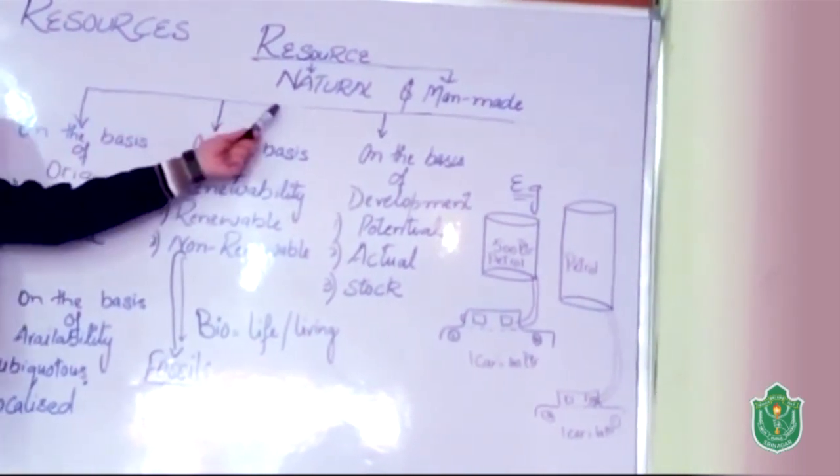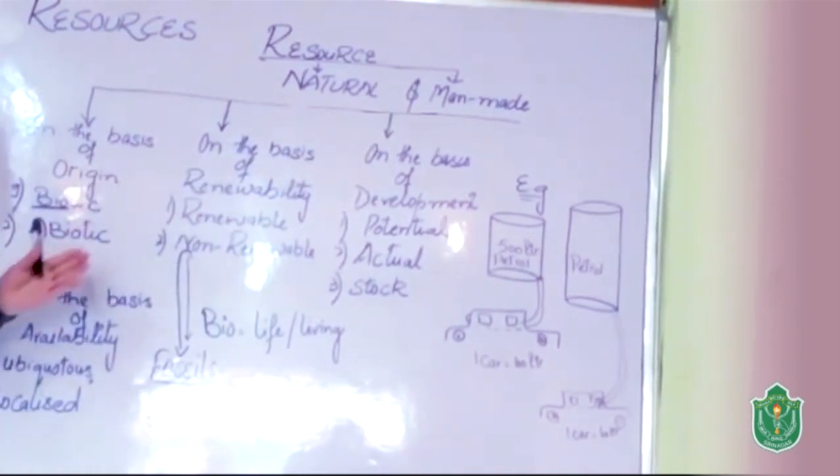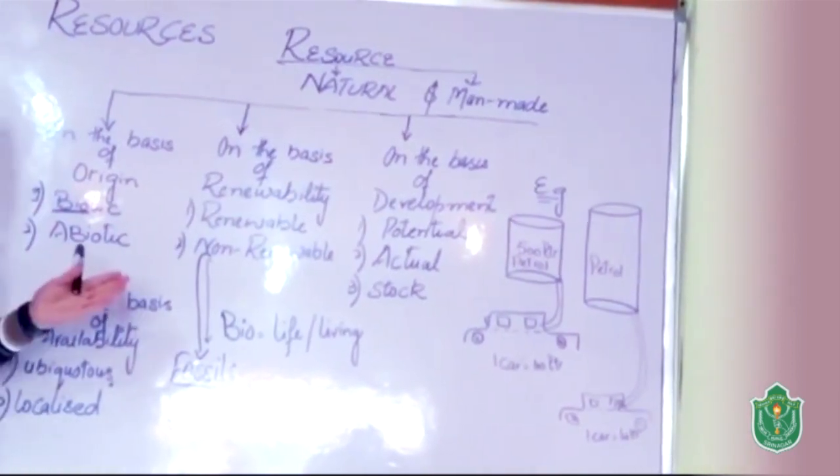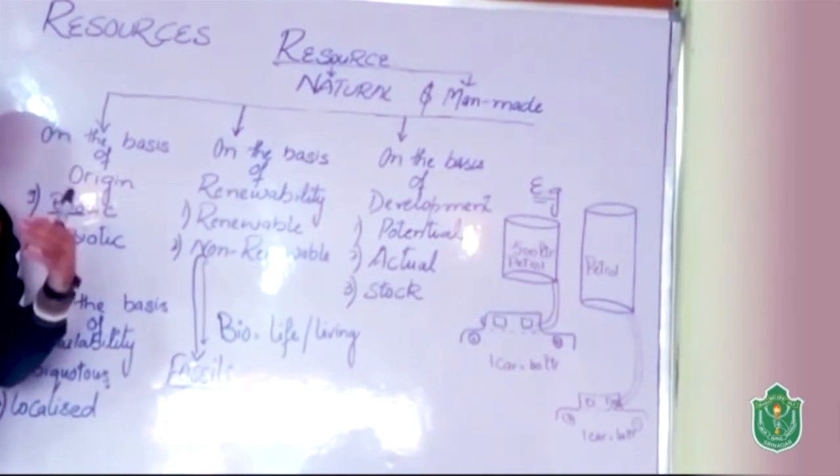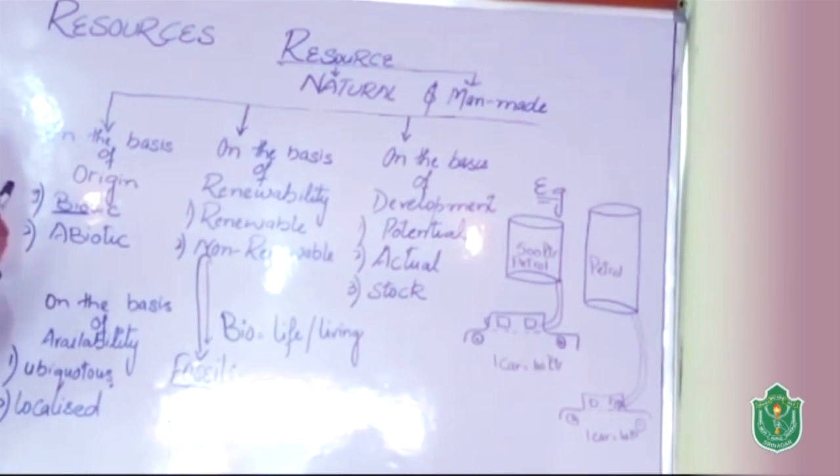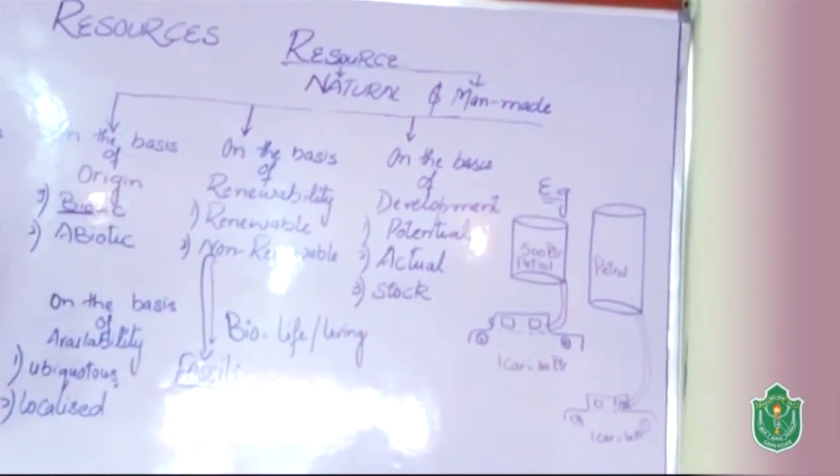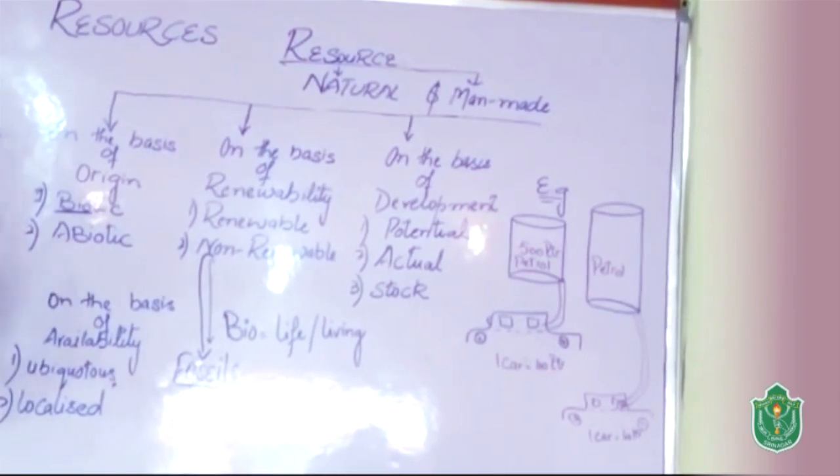One is natural resource and second one is man-made resource. Natural resources are those resources which we obtain directly from nature like solar energy, wind energy, geothermal energy, forests, air, water, etc.